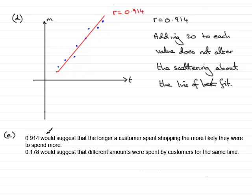Well, if it was 0.914, it would suggest that the longer a customer spent shopping, the more likely they were to spend more. Whereas 0.178 would suggest that different amounts were spent by customers for the same time.